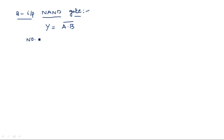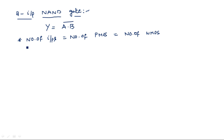The number of inputs equals the number of pMOS transistors and the number of nMOS transistors. When designing a CMOS circuit, total transistors needed is two times the number of inputs. With two inputs, we need two pMOS transistors and two nMOS transistors.